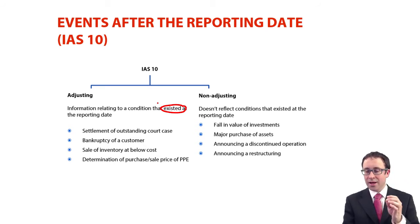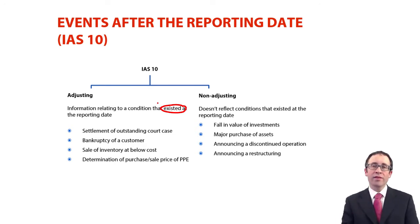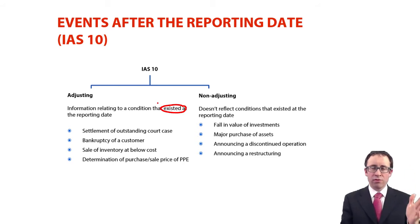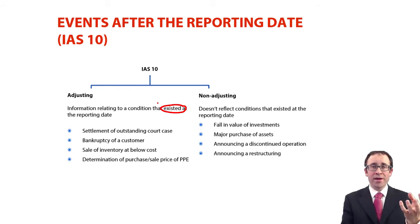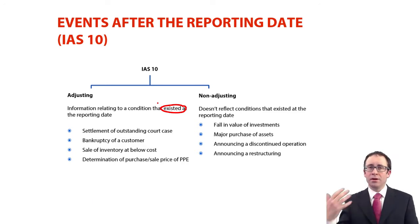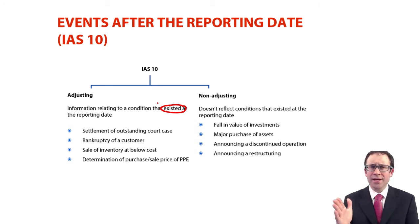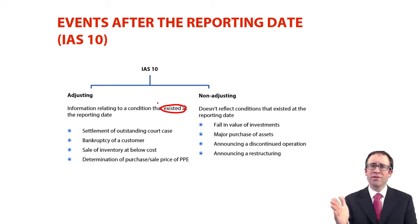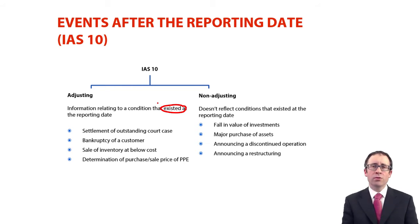A non-adjusting event is one where that condition didn't exist at the reporting date. For example, any fall in the value of investments — that value will fall because of something that happened on the date of the fall, when some new information became available to the stock market. So that event didn't exist at the reporting date and is therefore non-adjusting. If it's material, it would be disclosed. A major purchase of assets is similar — we hadn't bought the assets at the reporting date, it did not exist, and it wouldn't be prudent to recognise it. However, if it's material it will appear in the notes to the accounts.